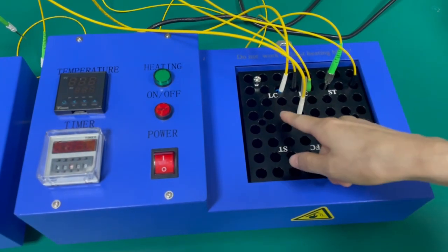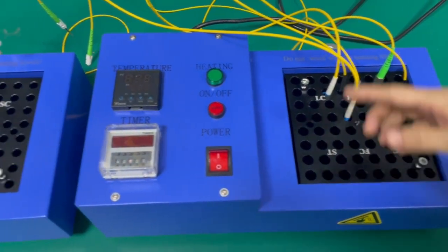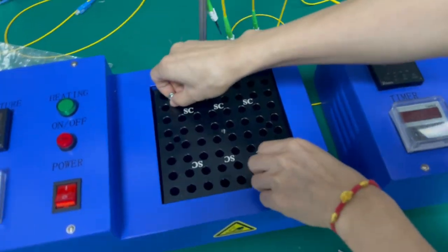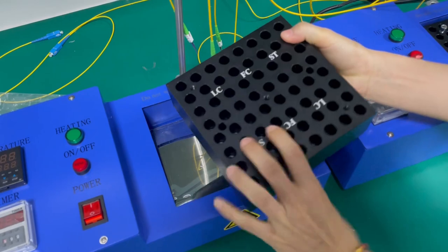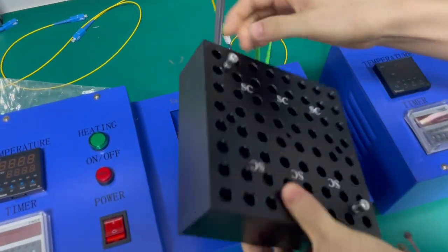We can see this side is LC, FC, ST, and the other side is SC. I will show you. It's the block, it's heating block. This is LC, ST, and this side is SC.